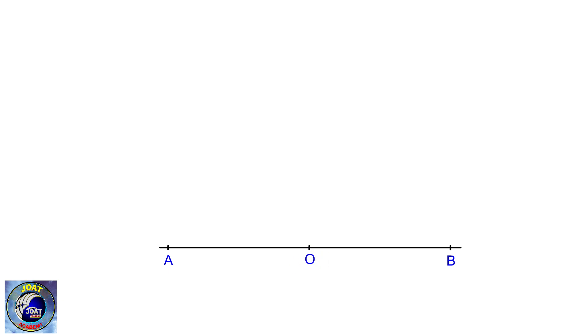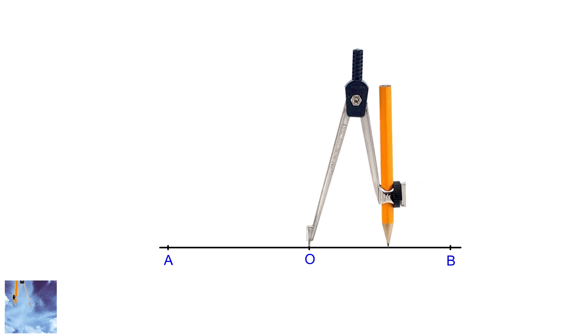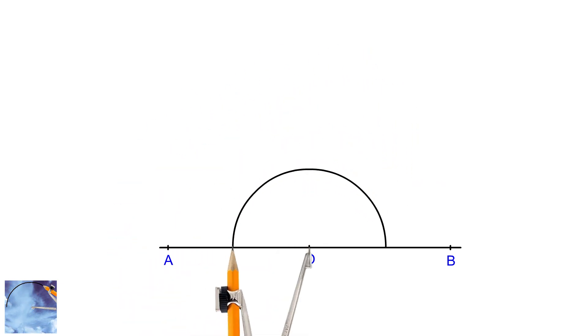Mark point O anywhere on the line segment AB. I have chosen this position. Place the compass at point O and draw a semicircle. Label the two intersection points as C and D.